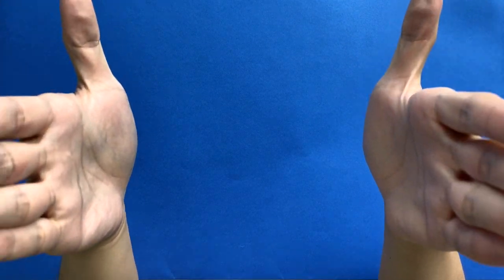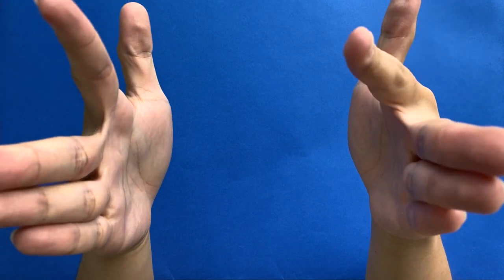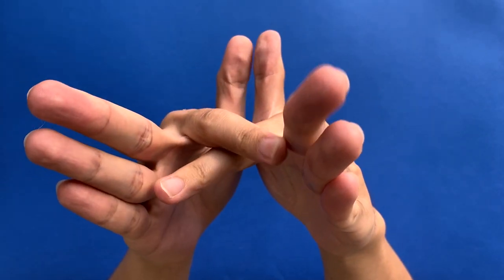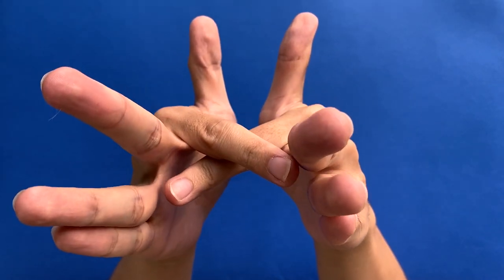First, have your two hands facing each other like you're about to clap your hands. Next, take your two pointer fingers and cross them over each other. This will serve as the eyes of the shark.